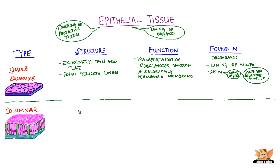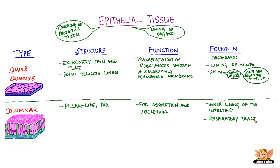Columnar epithelial tissue has cells which are pillar-like and tall. They help in absorption and secretion. They are found in the inner lining of the intestine.